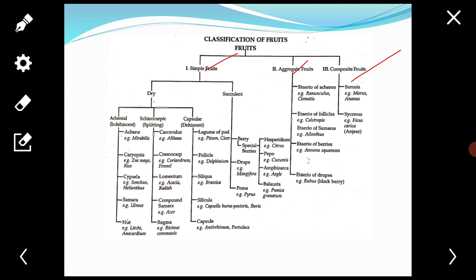Next, go to the simple fruits or types of simple fruits. There are two types: one is simple dry fruits and second is the simple succulent fruits. The simple dry fruit: in these the fruit wall or pericarp is dry. They are also further divided into three types: achene-like, that is indehiscent; schizocarpic, which is splitting; and capsular, that is dehiscent.